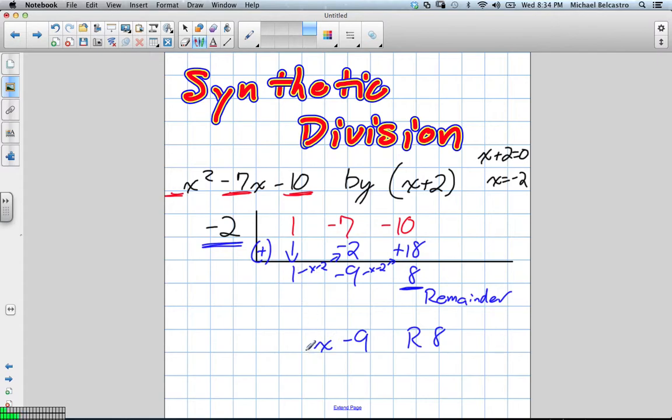So, it's going to be x or 1x. So, we have 1x, negative 9. We originally divided by x plus 2, and our remainder 8 is the same as saying plus 8 at the end of that.